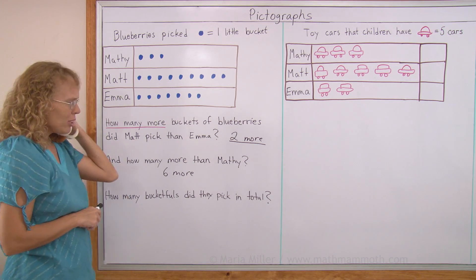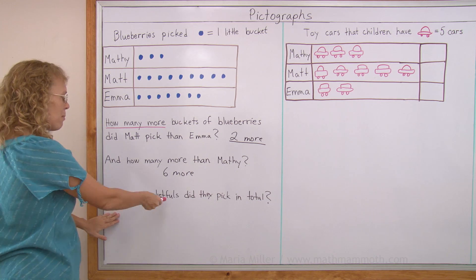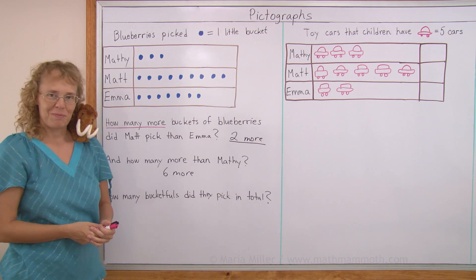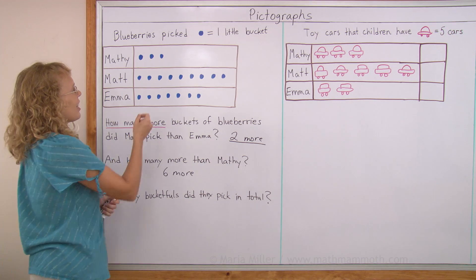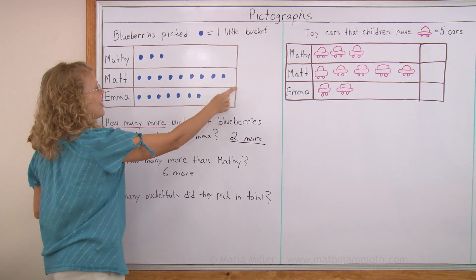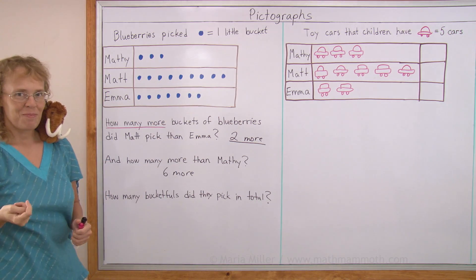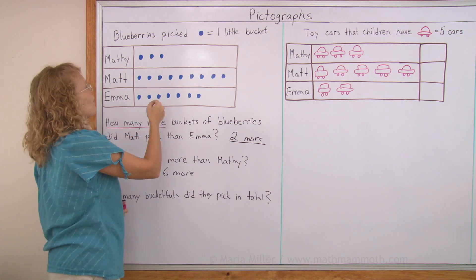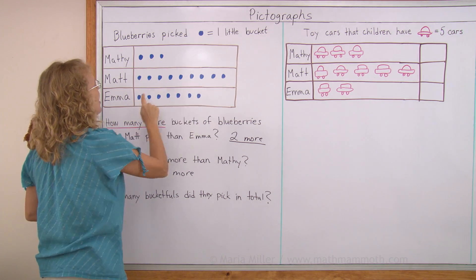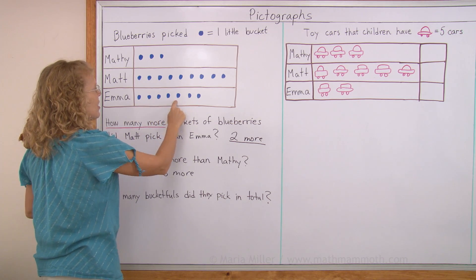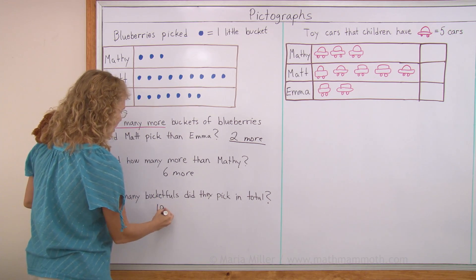Yeah, understandable, but I wish you were a hard worker, Matthew. How many bucketfuls did they pick in total? I could take the three and the seven and the nine and add three and seven and nine. Or I can just count here: one, two, three... all the way to nineteen. So I got nineteen. That was pretty easy, right?